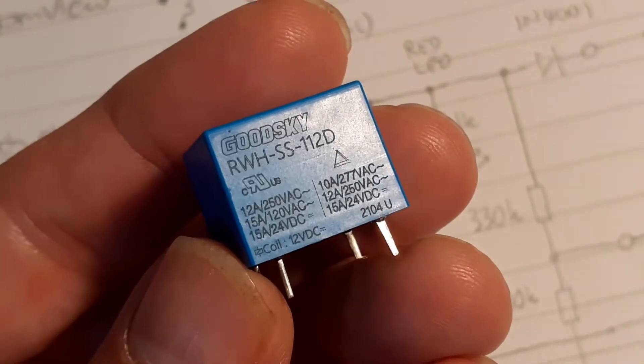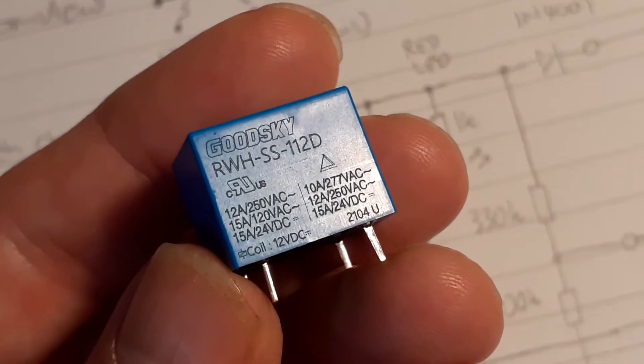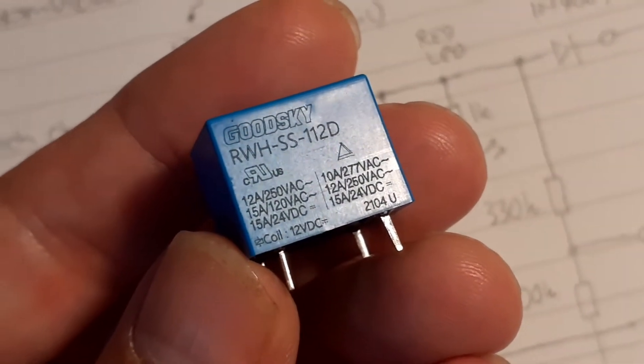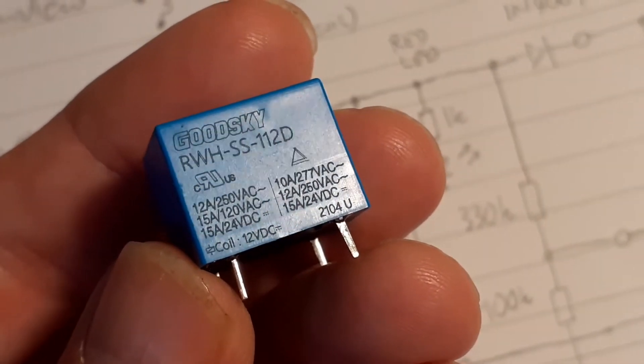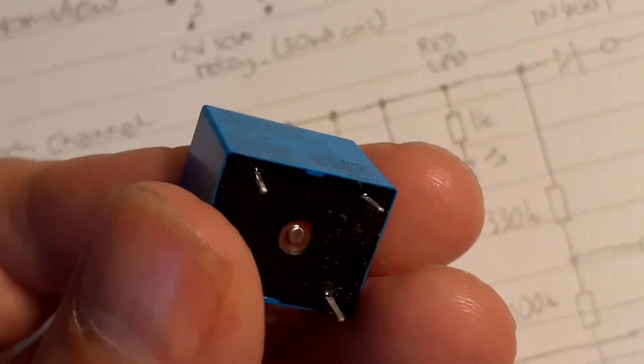Okay, so this is what the relay looks like. You can see it says 12 amps at 250 volts AC, 15 amps at 24 volts DC. Actually it will switch, but it's a 12-volt coil.